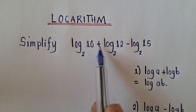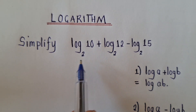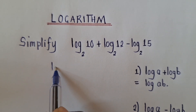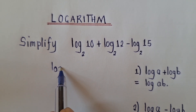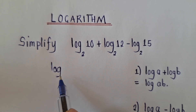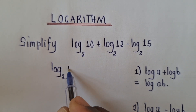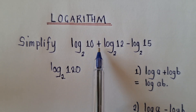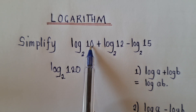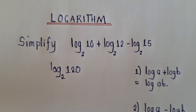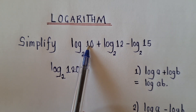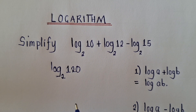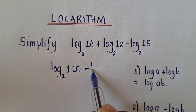Okay, hopefully you remember these properties. Let's start — we follow the order of operations and begin with the addition. So we write log base 2 of 120, because when we see addition we multiply: 10 times 12 gives us 120.